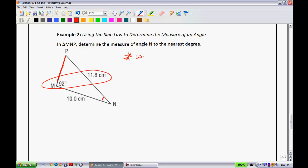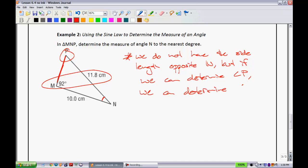We do not have the side length opposite N. But if we can determine angle P, so this angle right up here, we can determine angle N by subtracting angle P and angle M from 180 degrees. So, my plan is let's just find that angle P up there and then we can obviously get angle N.